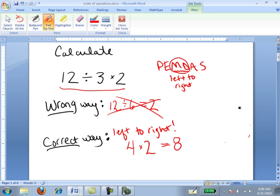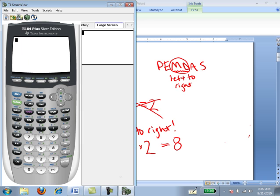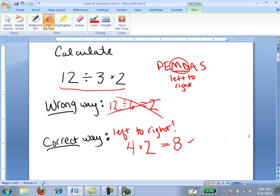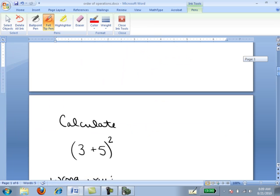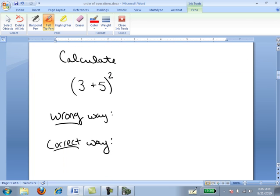Another thing to remember is that your calculator is automatically programmed to use PEMDAS correctly. So if you want to perform 12 divided by 3 times 2 on the calculator, you would type 12 divided by 3 times 2, and it says 8, just as we just calculated.